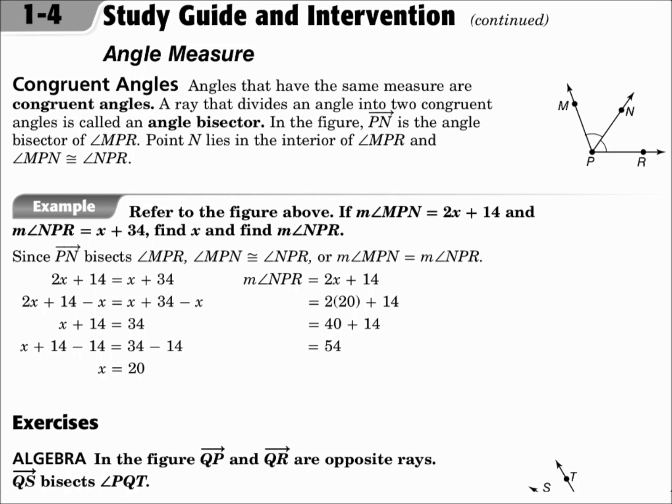Angles that have the same measure are congruent angles. A ray that divides an angle into two congruent angles is called an angle bisector. It cuts the angle in half. In the figure, ray PN is the angle bisector of angle MPR. Point N lies on the interior of angle MPR, and angle MPN is congruent to angle NPR. Notice the arcs that were drawn to show you that those two angles are congruent.